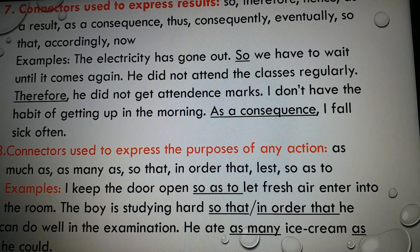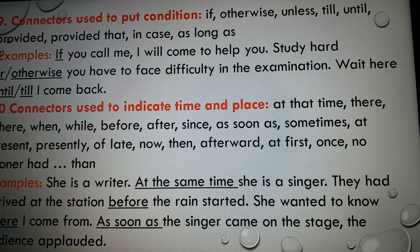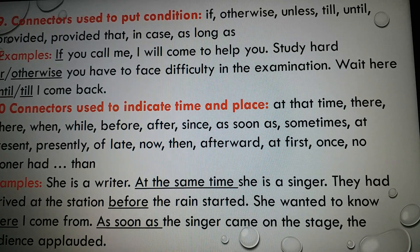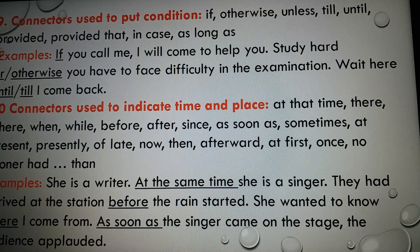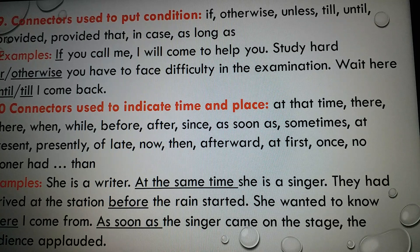Number nine: connectors used to put a condition. Some connectors known as condition connectors are used to show condition, like: if, otherwise, unless, till, until, provided, provided that, in case, as long as. Examples: 'If you call me, I will come to help you.' 'Study hard; otherwise, you have to face difficulty in the examination.' 'Wait here until — or till — I come back.' Here you can see clearly that the linkers are used to show condition.